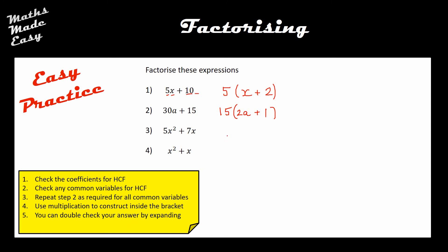Question three: 5 and 7 don't have any highest common factors, so I move straight to step 2. There are x's in both terms, so I can take an x outside the bracket, but I cannot take any of the numbers out. What do I times by x to create 5x²? It would have to be 5x. What do I times by x to make 7x? Just a 7.